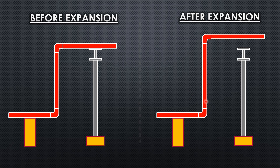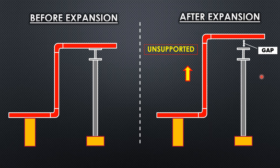After expansion, when the line goes to an operating condition due to thermal expansion, the line lifts. The line has a natural tendency of expansion. When there is a support at the bottom, lifting happens at the top. Comparing both pictures, at both support locations the line was supported before, but after expansion the top support gets lifted due to thermal expansion.